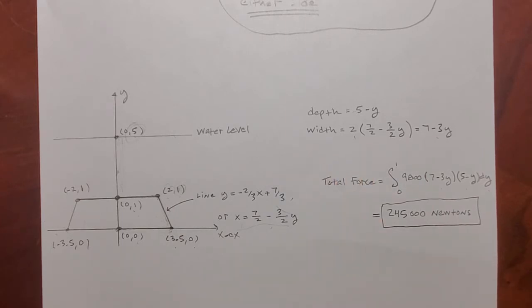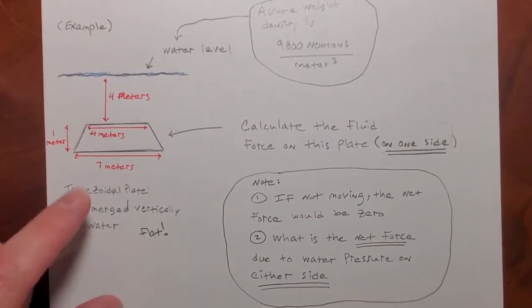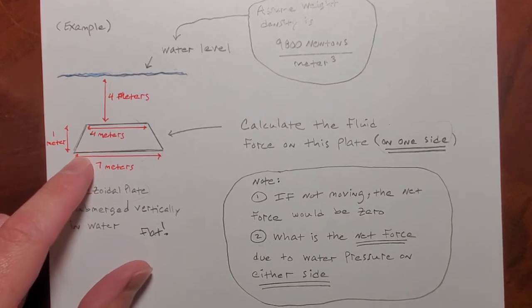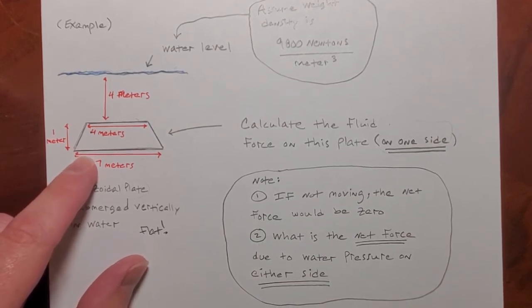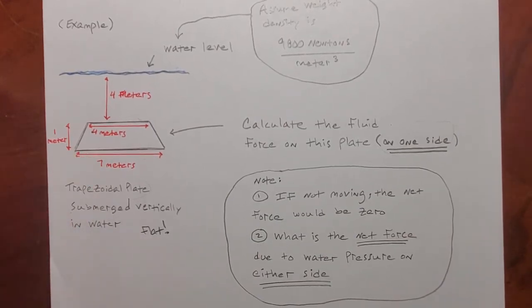But there are other ways that you could have done it. All right. I can take this same geometric object, the same plate, and impose the y-axis on it in a totally different way. But as long as all my measurements and formulas are correct, it's not going to matter.